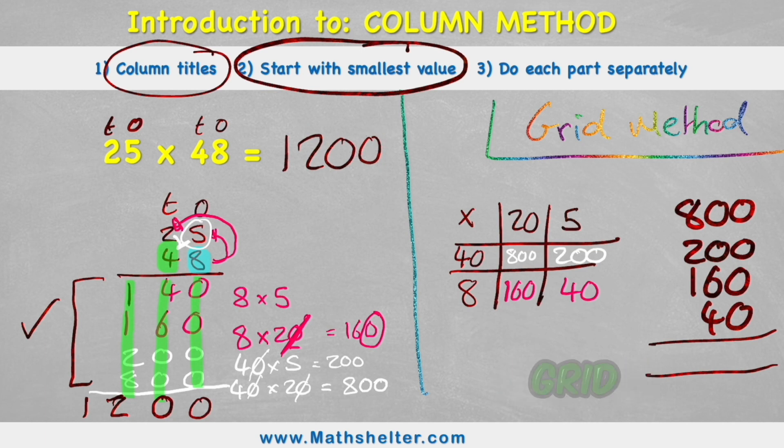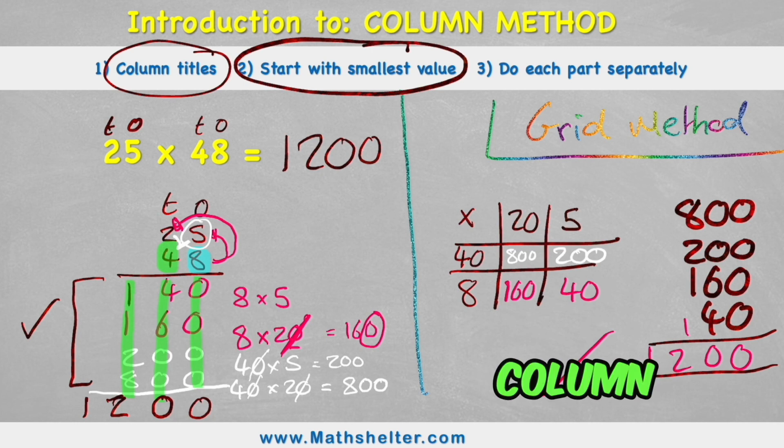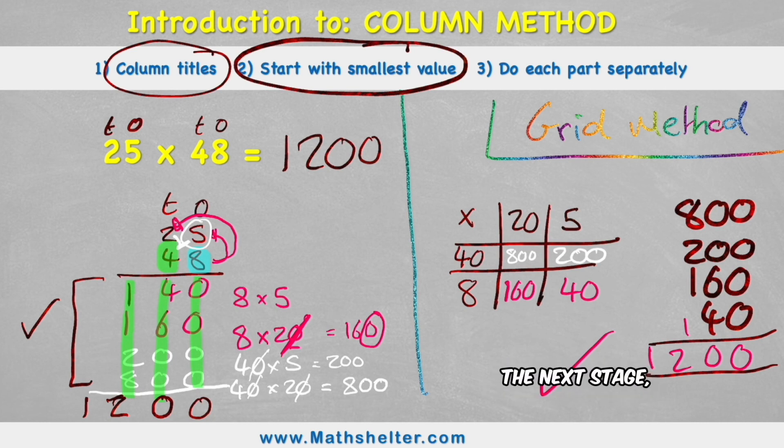Let's see if I get the same answer over in grid method. 0, 0, 0, 0 is 0. 6 and 4 is 10. 8 plus 2 is 1. Plus my 2 1s is 12. Same answer. 1,200. So we can hopefully see the relationship between grid method and column method. This is the expanded column method. So it's the first stage of column method. The next stage, we will make this even quicker.